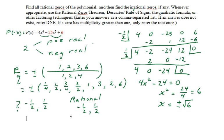So we have two irrational zeros. They are negative the square root of 6 and positive the square root of 6.